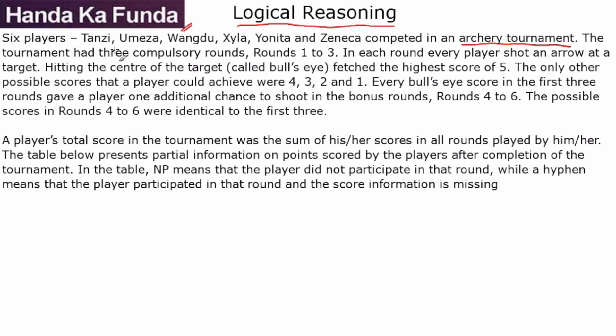There are six players: T, U, W, X, Y, and Z. The tournament has three compulsory rounds, round 1 to round 3. In each round, every player shot an arrow at the target. Hitting the center of the target called bull's eye fetched the highest score of 5. The only other possible scores that a player could achieve were 4, 3, 2, and 1.